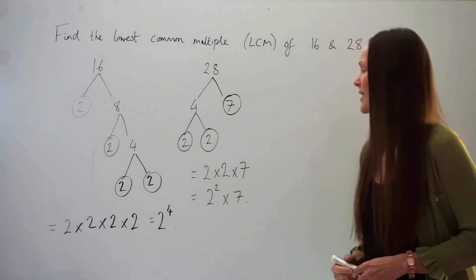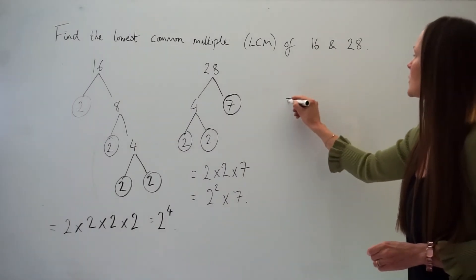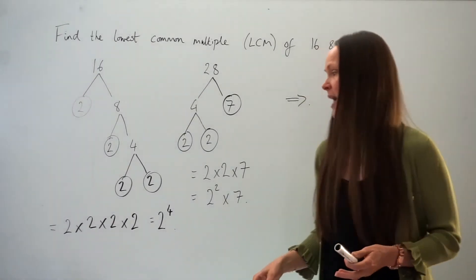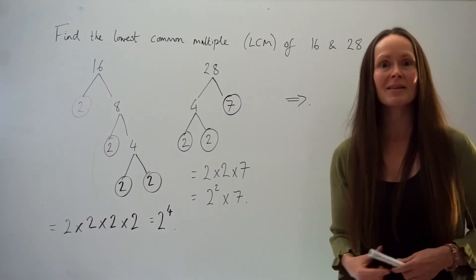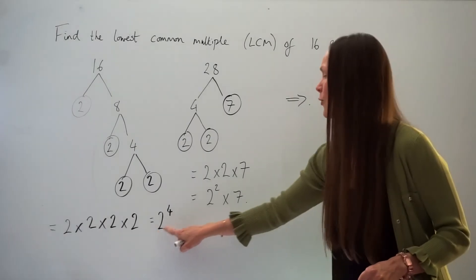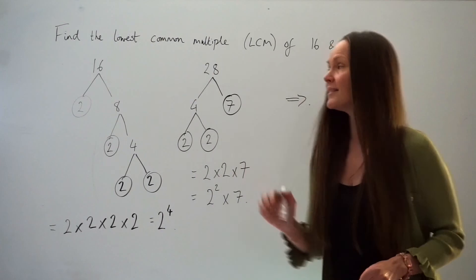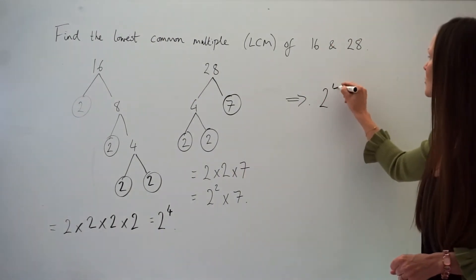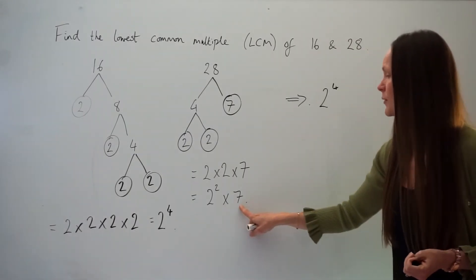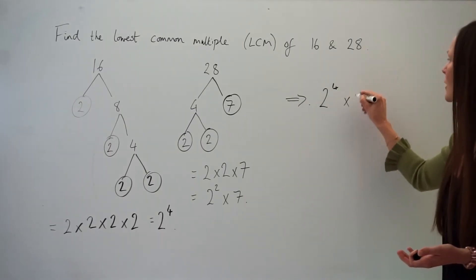There's one last step to find the LCM — the lowest common multiple. You have to look for the numbers with the highest powers and multiply them together. Comparing the number 2 from each tree, the one with the highest power is 2 to the power of 4 from 16's tree. Then the only other number to consider is 7, which is automatically the highest power, so you multiply these together.